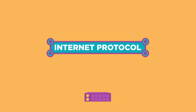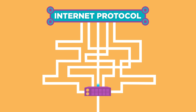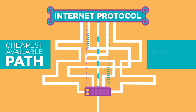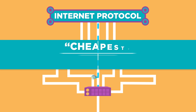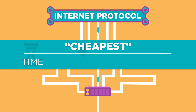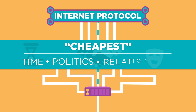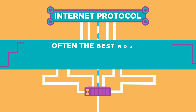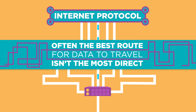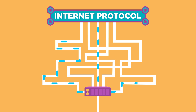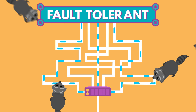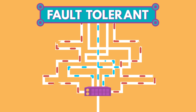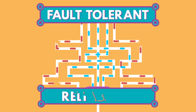As part of the internet protocol, every router keeps track of multiple paths for sending packets and it chooses the cheapest available path for each piece of data based on destination IP address for the packet. Cheapest in this case doesn't mean cost, but time and non-technical factors such as politics and relationships between companies. Often the best route for data to travel isn't necessarily the most direct. Having options for paths makes the network fault tolerant, which means the network can keep sending packets even if something goes horribly, horribly wrong. This is the basis for a key principle of the internet: reliability.